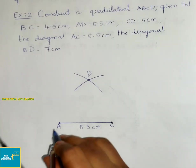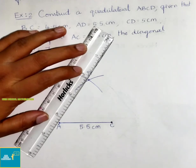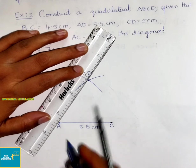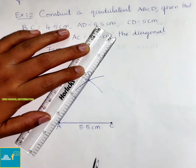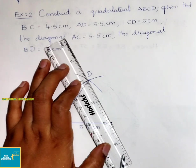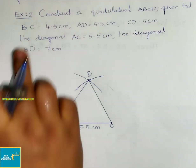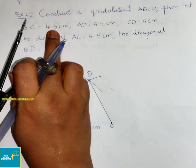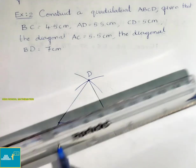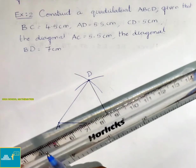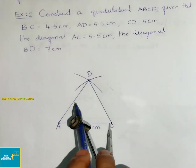Now let us draw AD and CD. With C as center, we shall draw a 4.5 cm arc. Let us take 4.5 cm now and draw the arc.